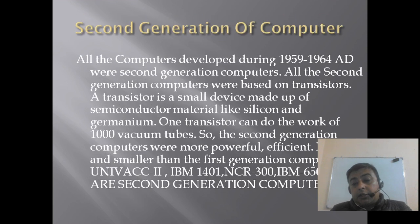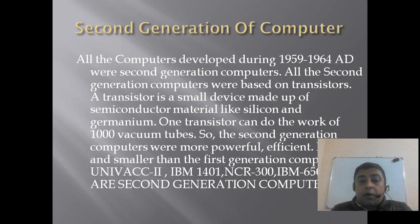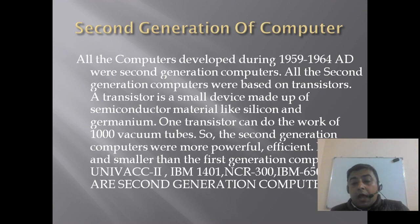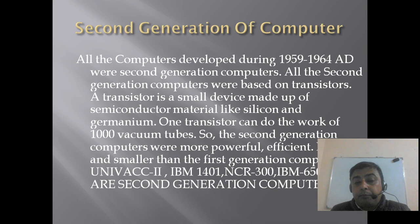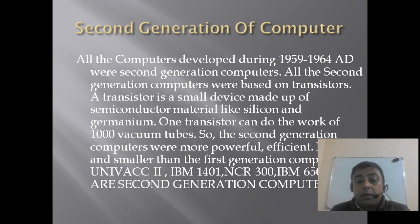Second generation of computers. All the computers developed during 1959 to 1964 AD were second generation computers. All the second generation computers were based on transistors. A transistor is a small device made up of semiconductor material like silicon and germanium. One transistor can do the work of 1000 vacuum tubes. So the second generation computers were more powerful, efficient, reliable and smaller than the first generation of computers.